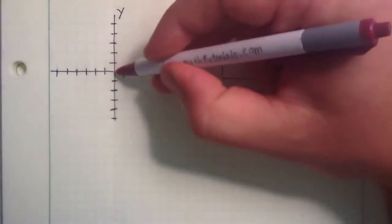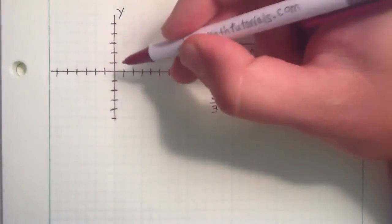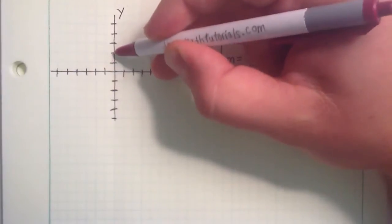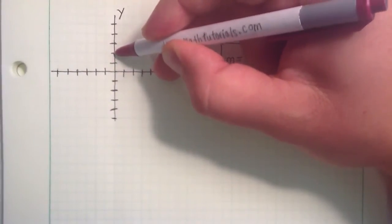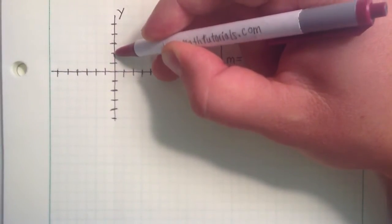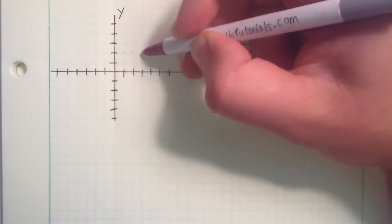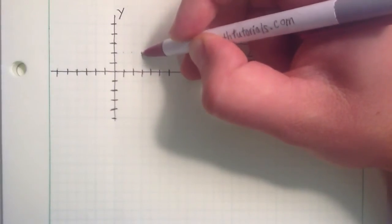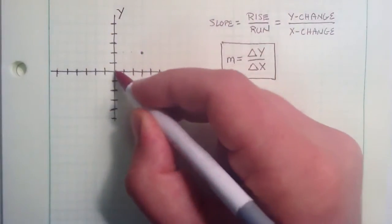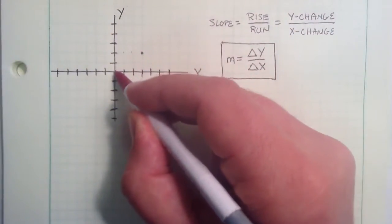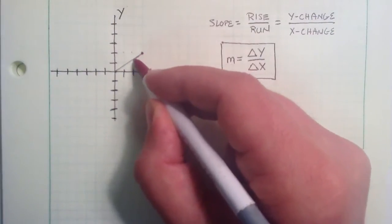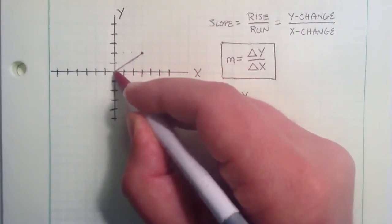So if we wanted to start at the origin, we could count up 2 units in the y direction, and then over 3 in the x direction. And then we just connect our line from the origin to that point, and we have our first segment of our line.